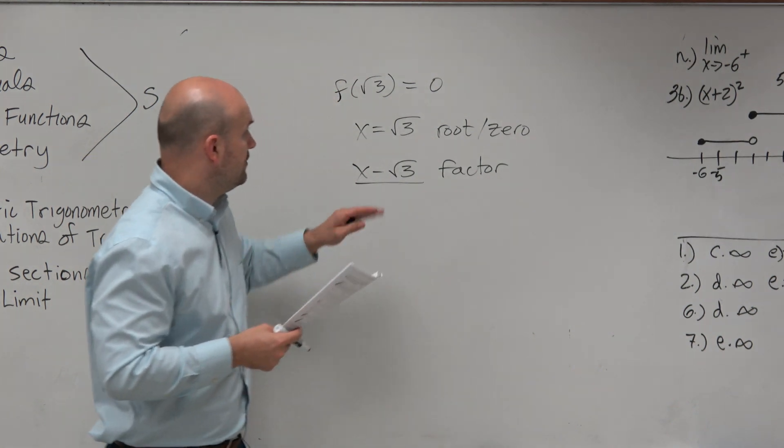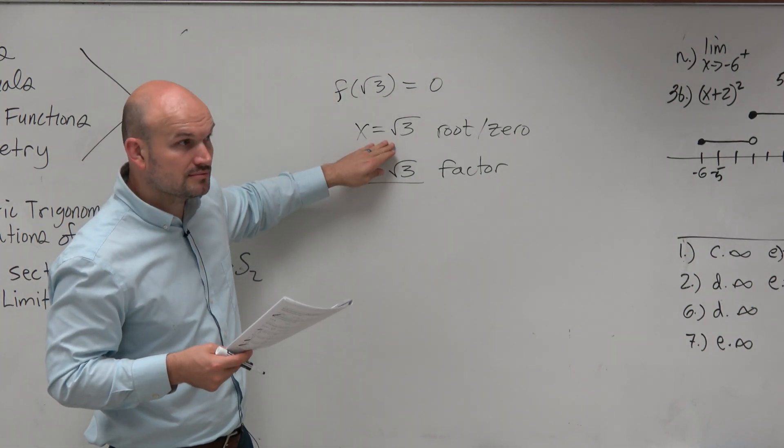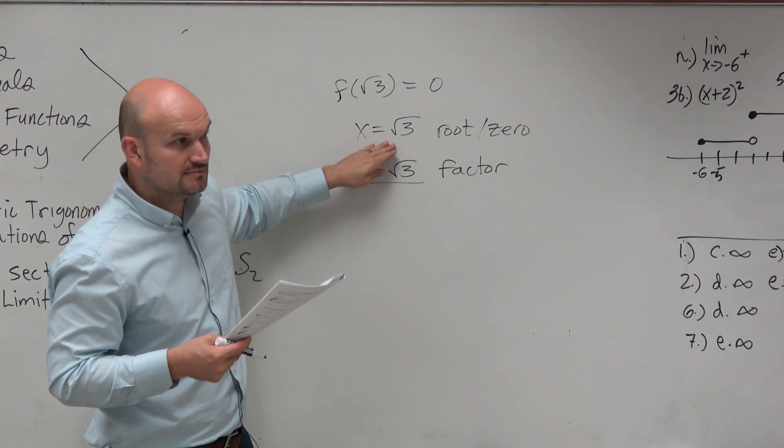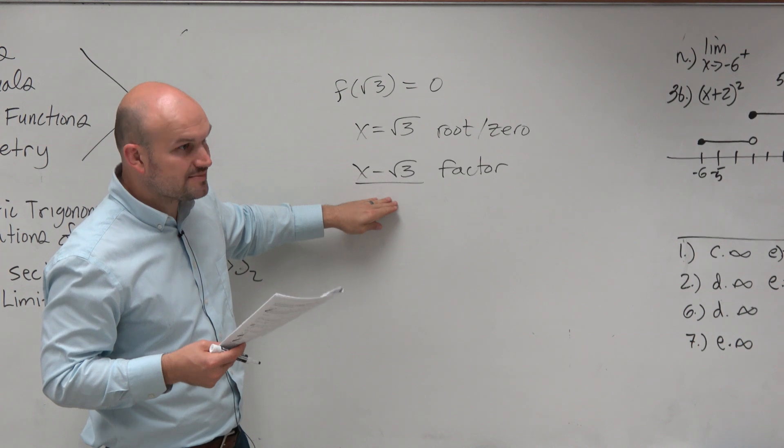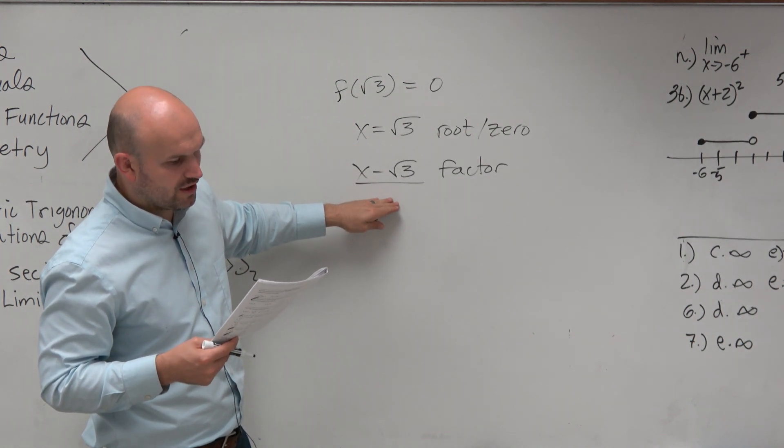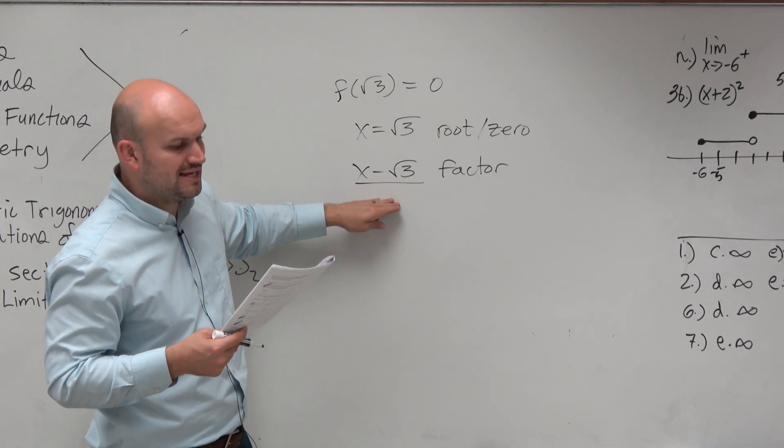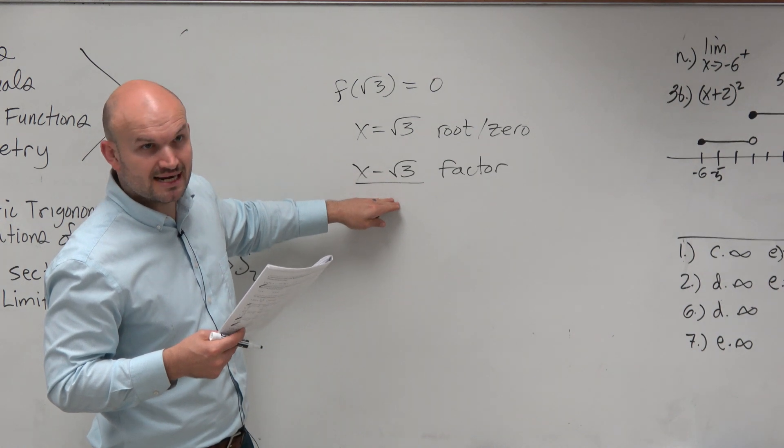So right now, this is true. We know that's true. So c is not the answer, because we know that has to be true. x minus square root of 3 has to be a factor. So we know b is not an answer.